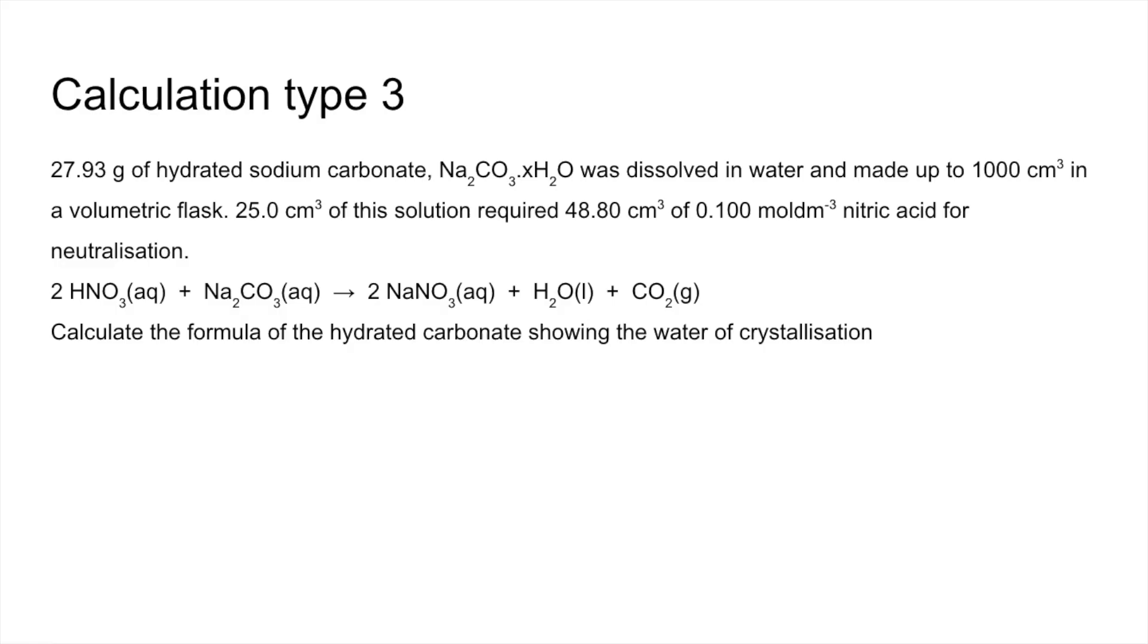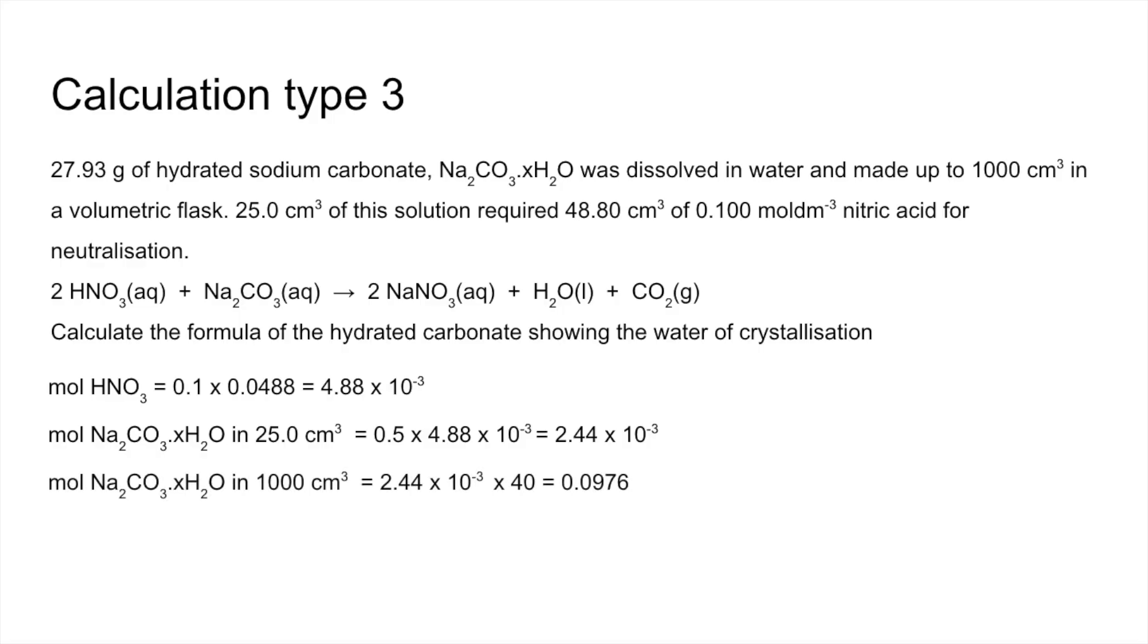The first thing we can do is calculate the moles of nitric acid, concentration times volume. The moles of sodium carbonate using the ratio is going to be half of that. And remember, that's the moles in 25 cm³ of the solution. The 27.93 grams actually made up 1000 cm³. So the moles in the 1000 is going to be 40 times these moles here, so that's 0.0976.